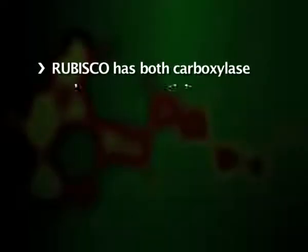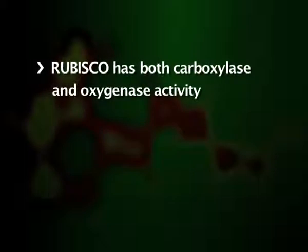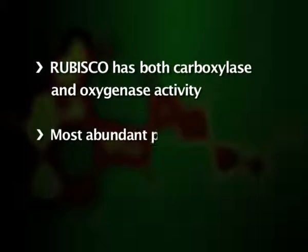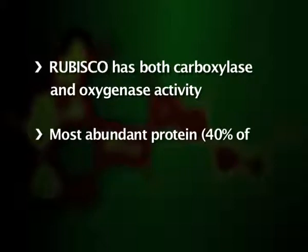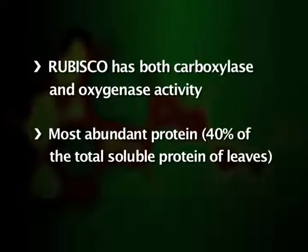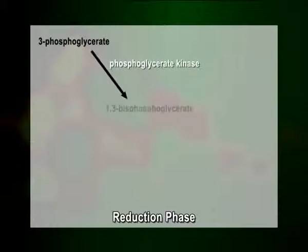It is to be noted that the enzyme RuBisCO has both carboxylase and oxygenase activity and is a very abundant protein, representing 40% of the total soluble protein of leaves. In the reduction phase of the C3 cycle, the 3-phosphoglycerate formed as a result of the carboxylation of RuBP is phosphorylated to 1,3-bisphosphoglycerate (1,3-BPG). The enzyme 3-phosphoglycerate kinase catalyzes the phosphorylation of 3-PGA by ATP produced during the light reaction.